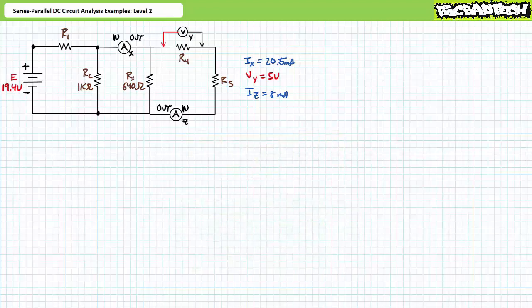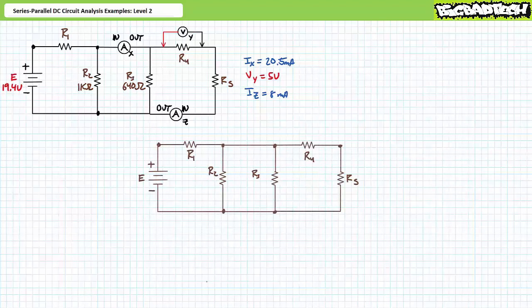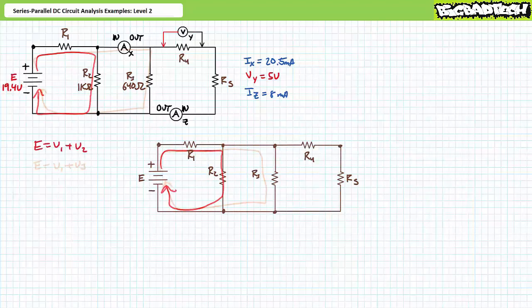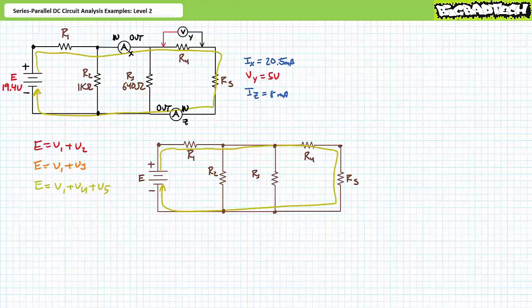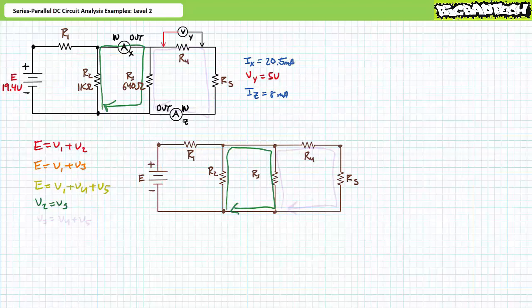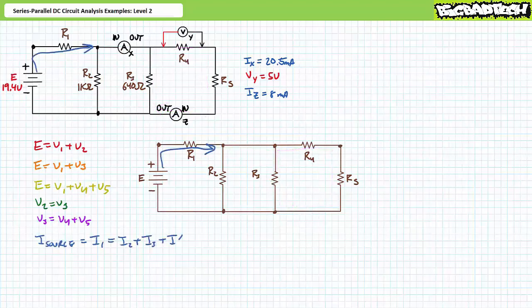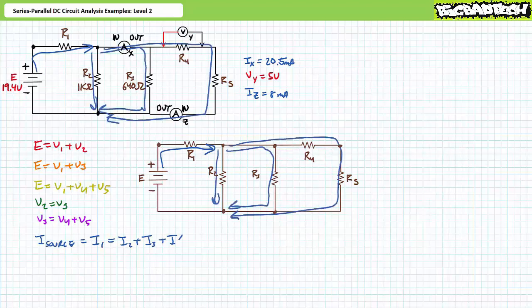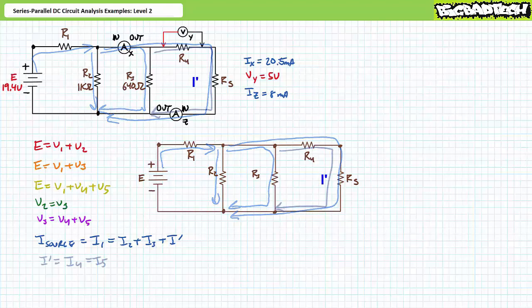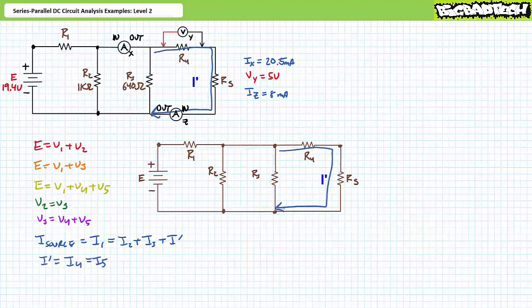All right folks, if you did this correctly, you are tracking and you will have no problems for the rest of your life. Without instrumentation, a Kirchhoff's voltage law analysis of the red loop suggests E equals V1 plus V2. The orange loops give E equals V1 plus V3. The yellow loop gives E equals V1 plus V4 plus V5. The green loops give V2 equals V3. The purple loops give V3 equals V4 plus V5. Source current must travel through R1, so source current equals I1. It then splits into three paths: I2 on the left, I3 in the middle, and I single prime on the right, where I single prime equals I4 which equals I5, meaning R4 and R5 are undoubtedly in series.